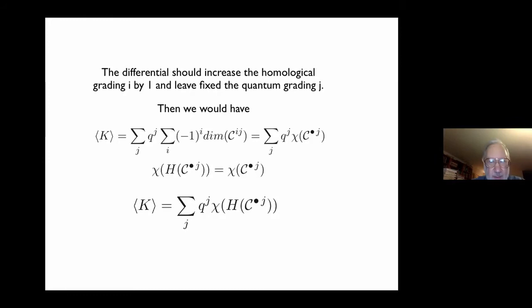If there was a differential, then by homological algebra the Euler characteristic of the homology — the alternating sum of its dimensions — equals the Euler characteristic of its underlying chain complex. So we get a formula for the bracket that is the sum of Q to the J times the Euler characteristics of these homologies. Those homologies are going to be the Khovanov homology — a family of homologies, one for each grading J — and the graded Euler characteristic equals the bracket.